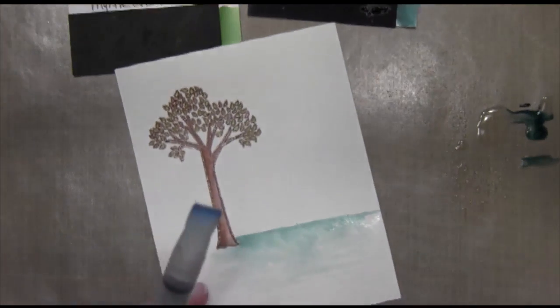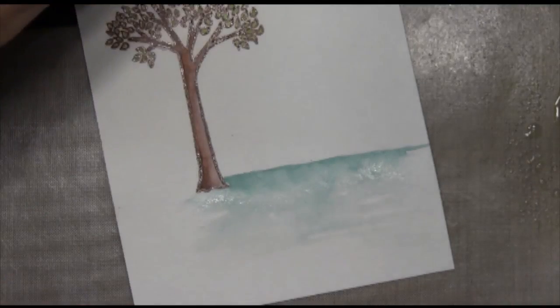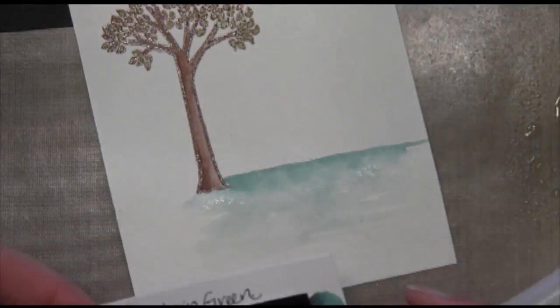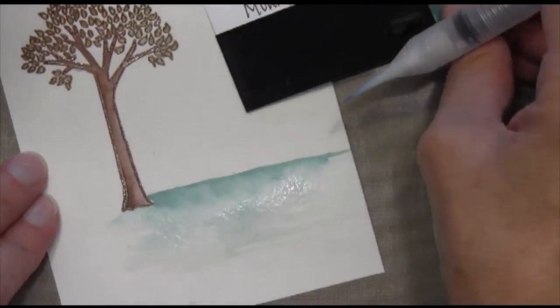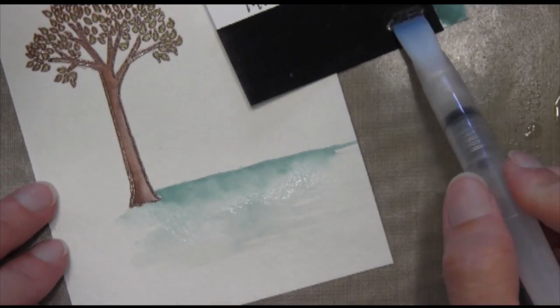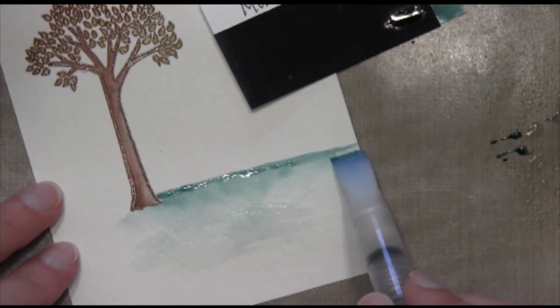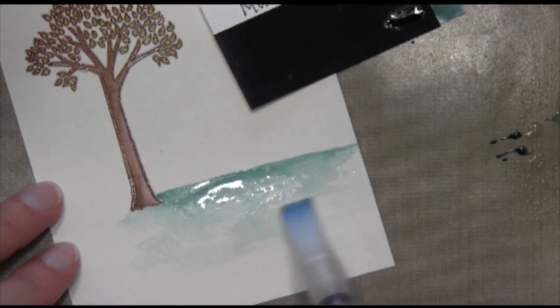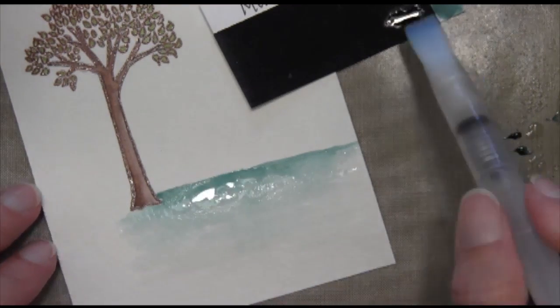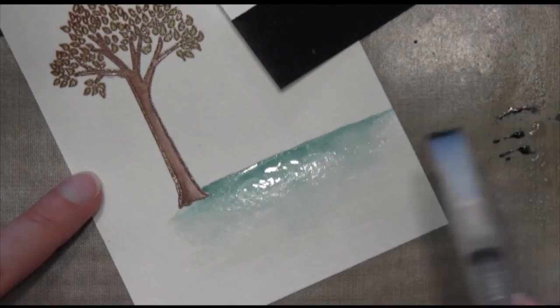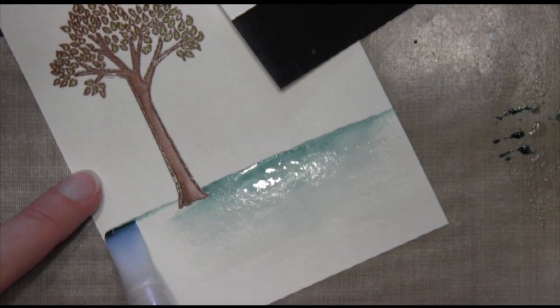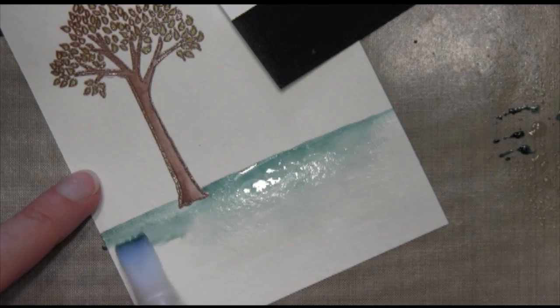And once I got my line across, then I took my water brush and I pulled the color downward. So my darkest is going to be at the top where I first applied my color. I'm just going to keep doing this until I get the color that I want. And you'll see that I have quite a bit of water on the paper. I like to have more water rather than less because if it's too dry then it'll set and it won't blend as well.